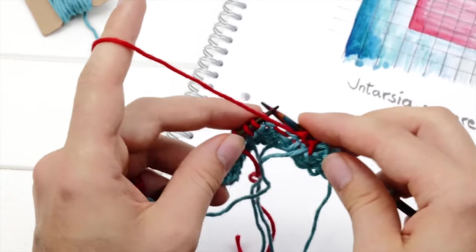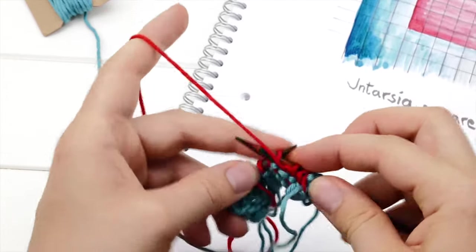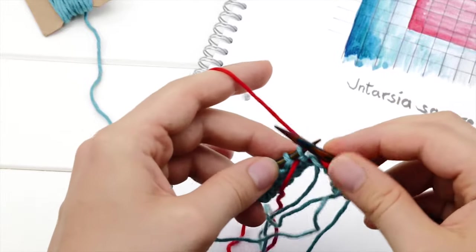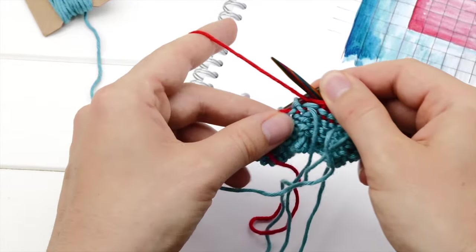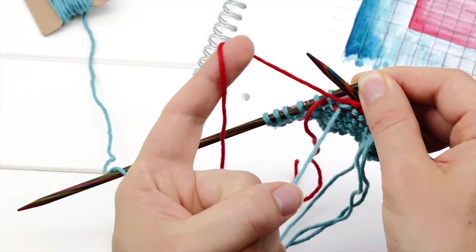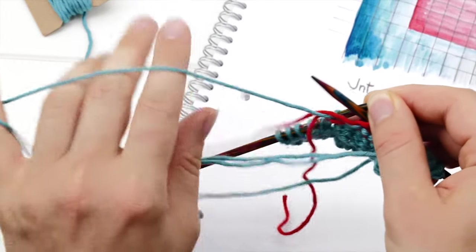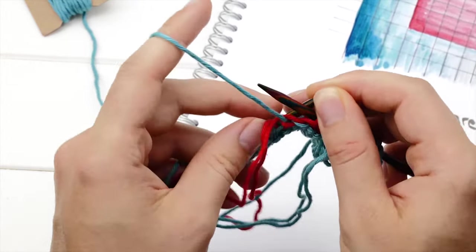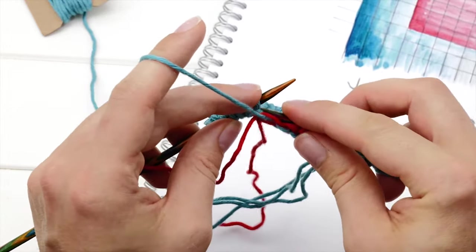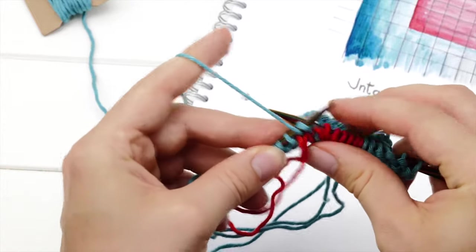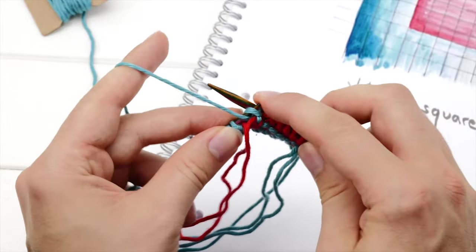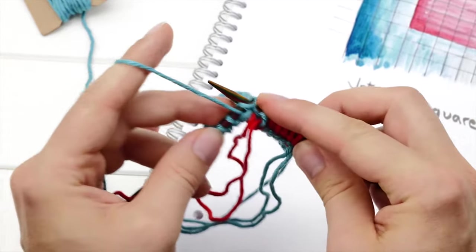And that way, you create a nice little join without any gaps. Let's do it one more time. So, I'm purling towards the next color change. And now, again, pick up the new color from below so the previous color rests on top of it. Tuck on the new color to tighten up that stitch. Knit one stitch. Pull on gently on the previous yarn to tighten up that stitch and continue knitting.